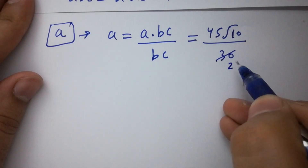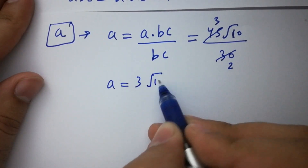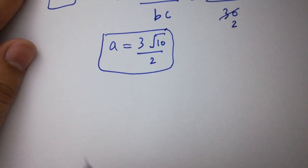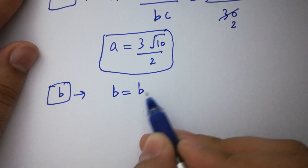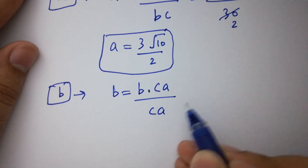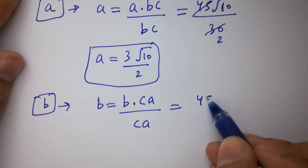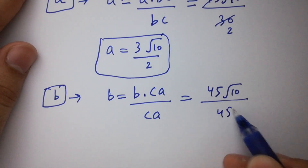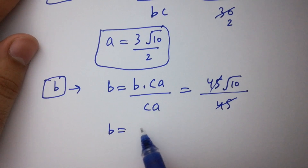Simplifying: 15 times 2 is 30, and 15 times 3 is 45. So a equals 3 square root of 10 over 2. That is the value of a. Next, to find b, b equals abc over ca, which is 45 square root of 10 over ca. Here ca equals 45, so 45 and 45 cancel. We get b equals square root of 10.